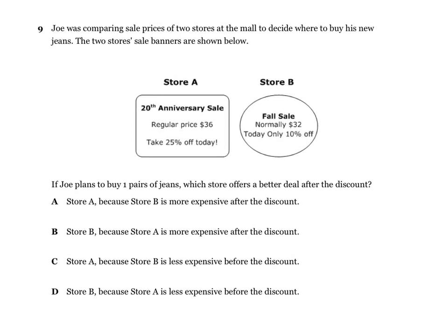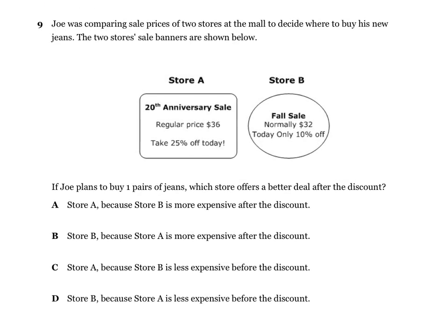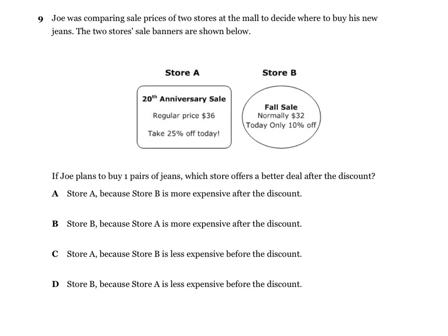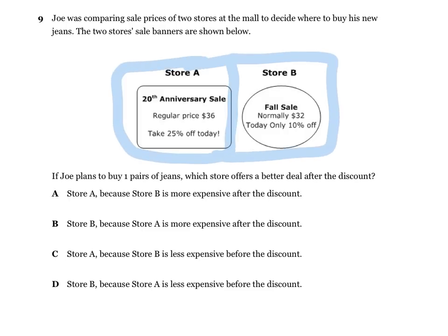Number nine: Joe is comparing sales prices of two stores in the mall to decide where to buy his new jeans. The two store sale banners are shown below. If Joe plans to buy one pair of jeans, which store offers the better deal after the discount? We have store A and store B — they need to be separate. We're going to do a percent proportion here, and it's going to be is over of equals percent over 100.